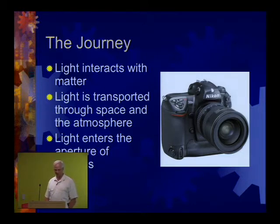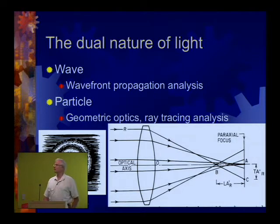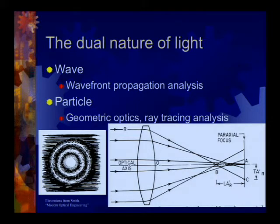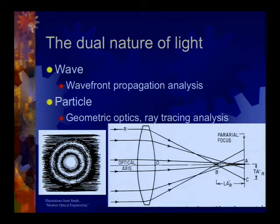Light is a strange beast — sometimes it acts like a particle, sometimes like a wave. Both aspects of its dual nature affect resolution. The wave aspect can be analyzed using wavefront propagation analysis, while the particle nature can be analyzed using geometric optics or ray tracing. The left illustration shows a diffraction pattern through an aperture; the right shows ray tracing through a lens.